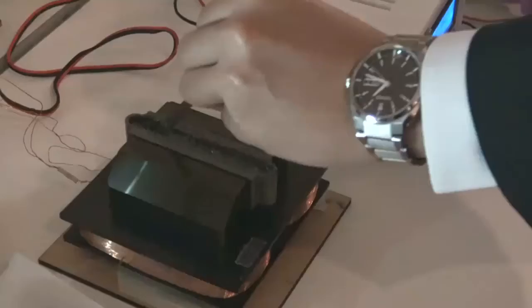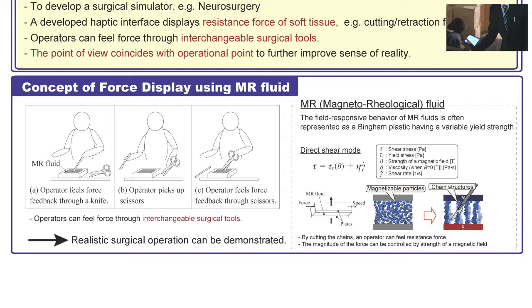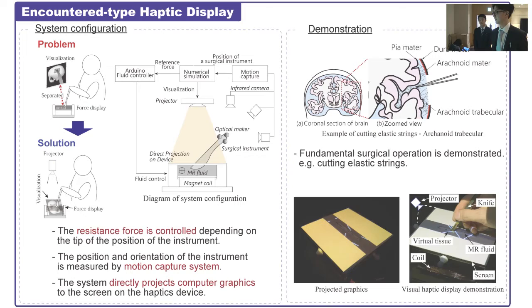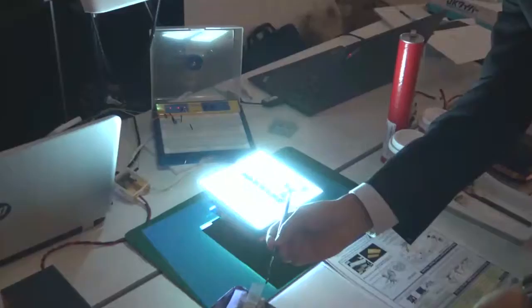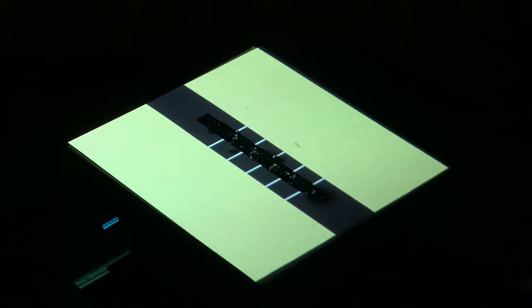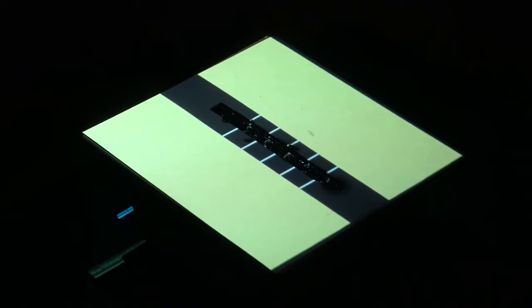The advantage of this device is that it can use real surgical instruments and move freely. We propose a new type of visual haptic display. The system mainly consists of a numerical simulation and motion capture system, and a haptic interface using Emerald Flu and a projector. It projects the computer graphics to the screen on the haptic device directly.